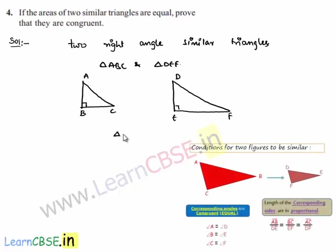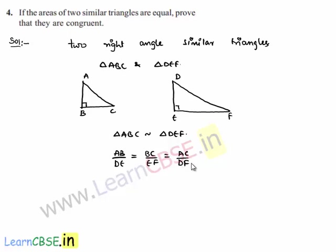As triangle ABC is similar to triangle DEF, we can write corresponding sides in proportion. That is, AB by DE is equal to BC by EF, which is equal to AC by DF.